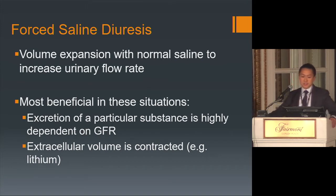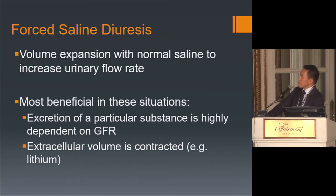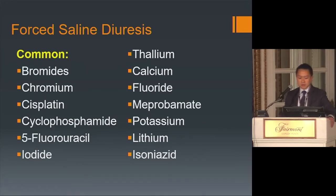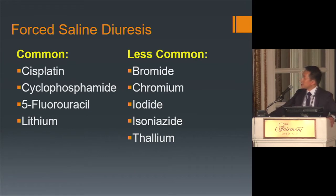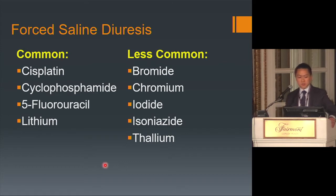In addition to urinary alkalinization, there's also forced saline diuresis, where you give an infusion of sodium chloride to volume-expand the patient and increase urinary flow rate. This is helpful for substances whose excretion is highly dependent on GFR and for patients who present with volume contraction, such as those who overdose on lithium. Common agents for which forced saline diuresis is used include chemotherapeutic agents and lithium.